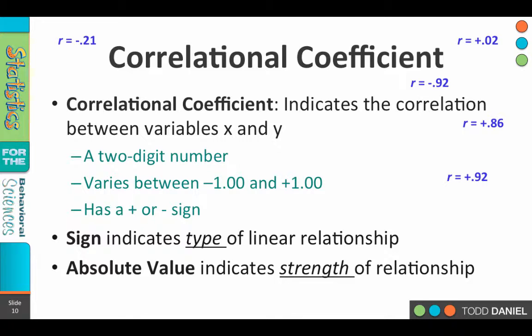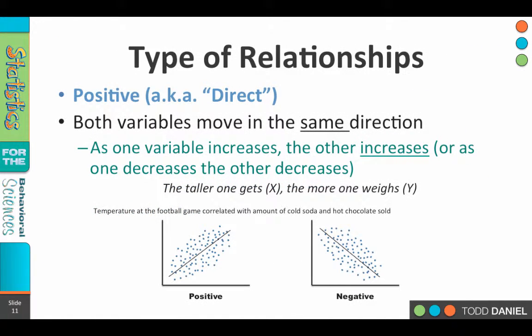So let's talk more about the type and the strength of a relationship. One type of relationship between variables can be described as positive or direct. This means that both of the variables move in the same direction. So as one variable increases, the other also increases. As the first variable decreases, the second also decreases. So if our X variable is height and our Y variable is weight, when we look especially at children, we find that the taller you get, the more that you weigh.